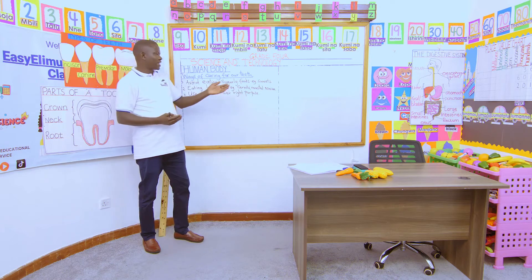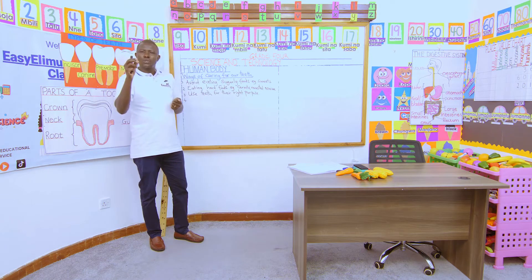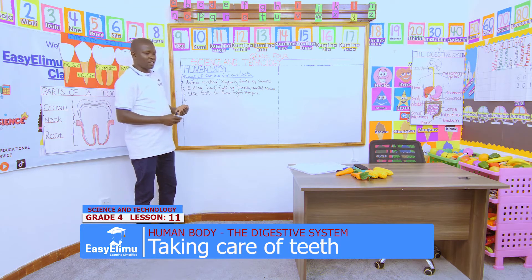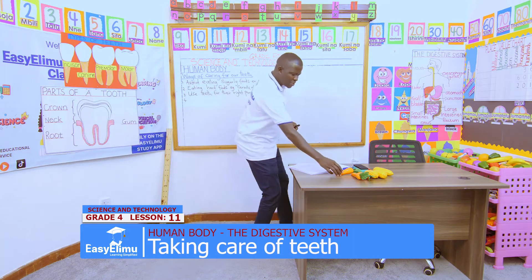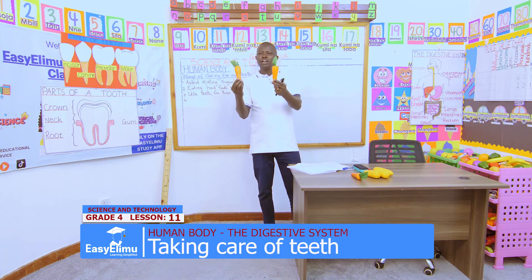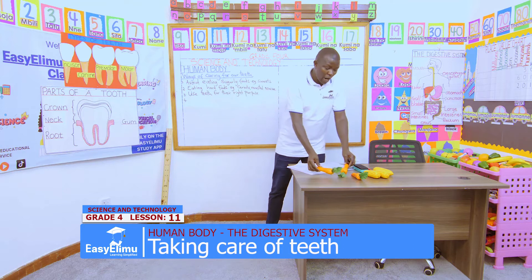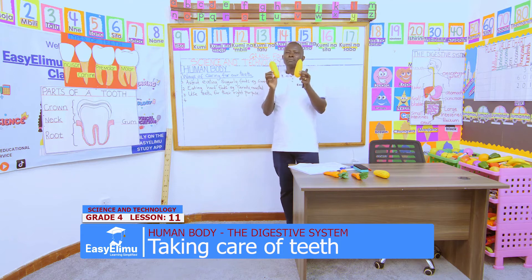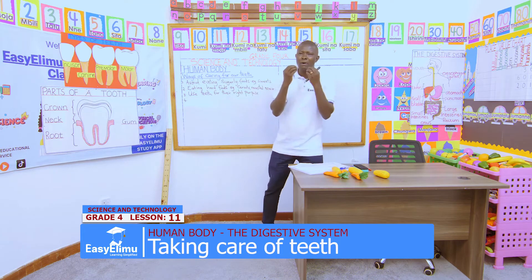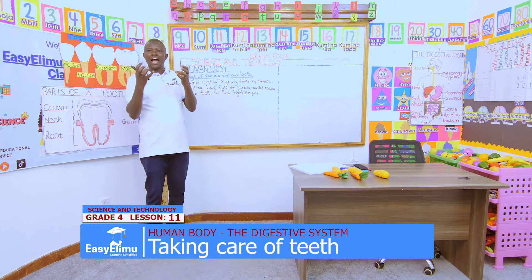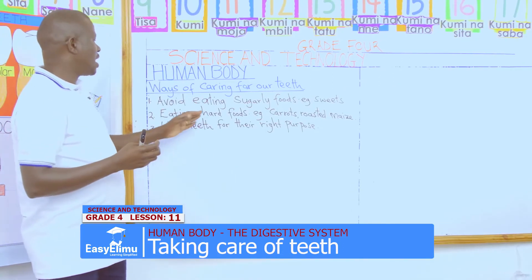Why do we avoid eating sugary foods like sweets? Because that sugar will affect our teeth, will destroy our teeth. And from you Mary — eating hard foods. Eating hard foods. For example, carrots. Why do we emphasize on eating hard foods like these ones we have here on the table? I have examples of carrots, raw carrots, roasted maize. Simply because they are hard and they will harden our teeth. Even cassava is also an example of hard food. It will harden our teeth.